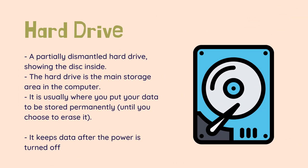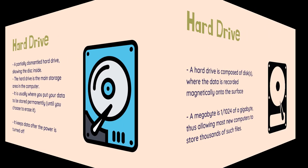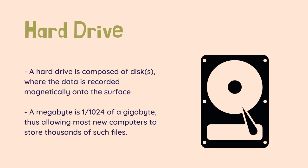The hard drive is the main storage area in the computer. It is usually where you put your data to be stored permanently, until you choose to erase it, and it keeps data after the power is turned off. The official name is hard disk drive, but it is almost always referred to as hard drive. A hard drive is composed of disks where the data is recorded magnetically onto the surface, similar to records, CDs, and DVDs.